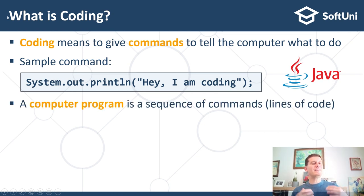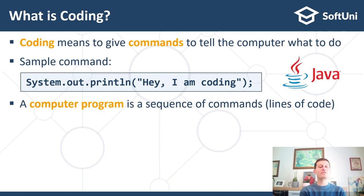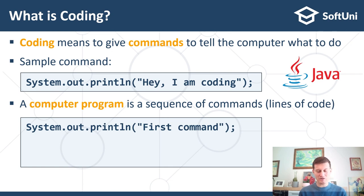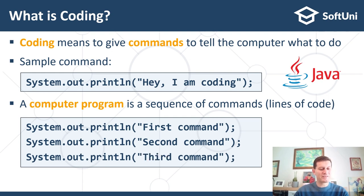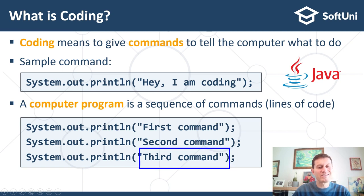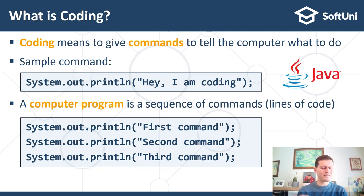A computer program is a sequence of commands — a sequence of lines which come one after another. This is the first command: it tells the computer to print at the command line the text 'first command'. The second command prints 'second command', and another command prints 'third command'. Texts in programming are usually put in single or double quotes, and parameters for commands are usually put into brackets, just like writing expressions in math.